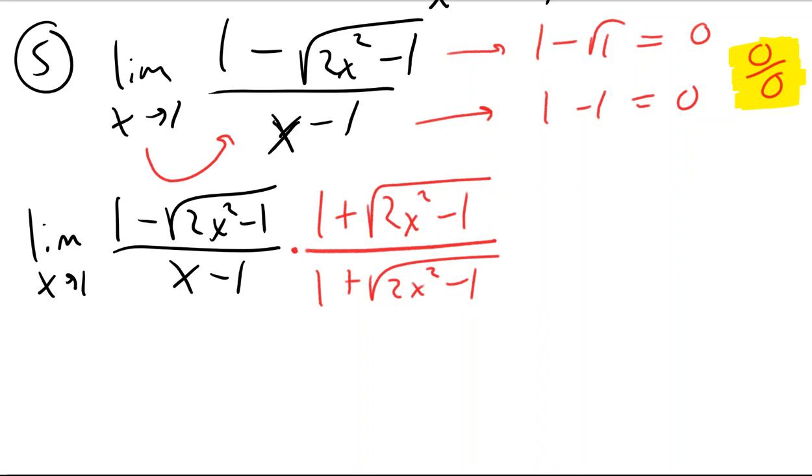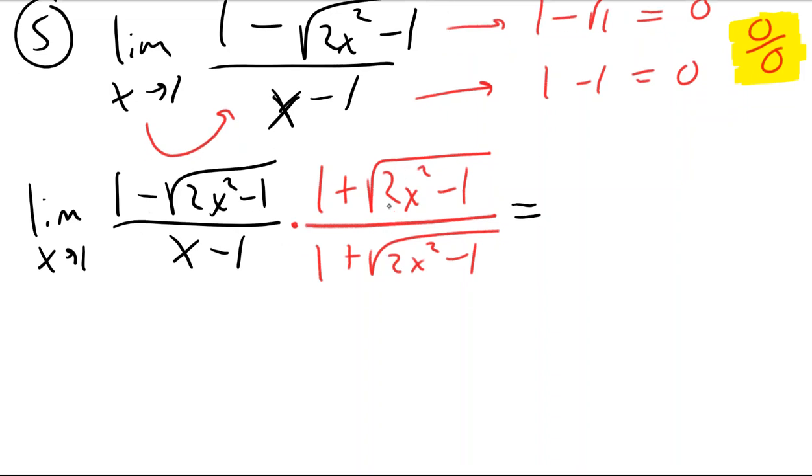So I really want to multiply by the conjugate of the numerator. But to do that, be careful and make sure that you multiply the top and the bottom by the same thing. So this way it's like I'm multiplying by 1.